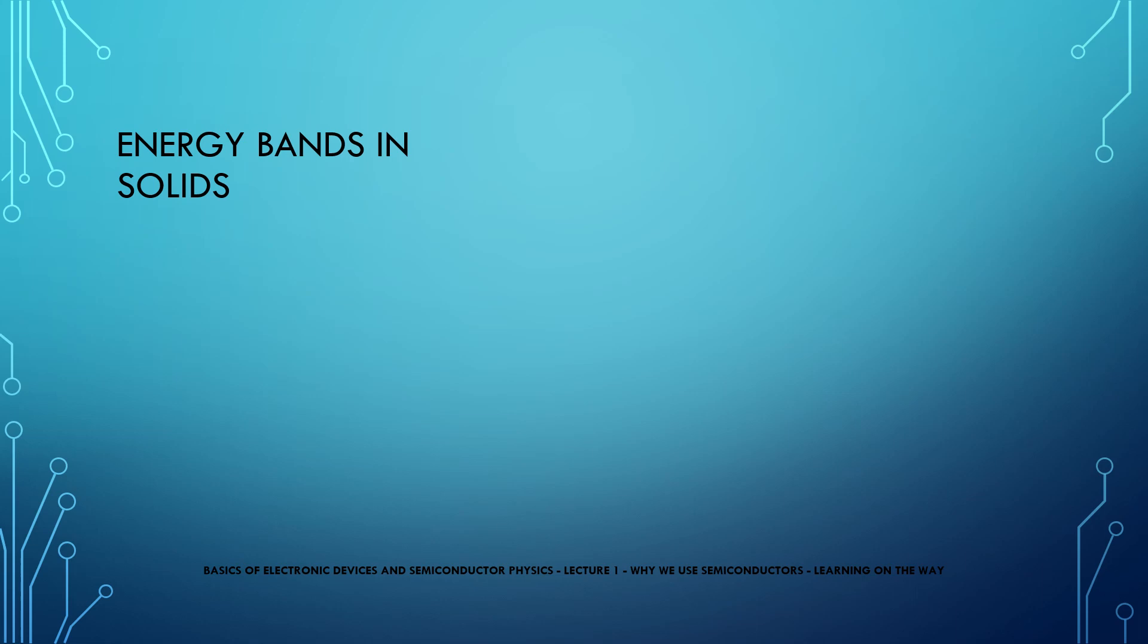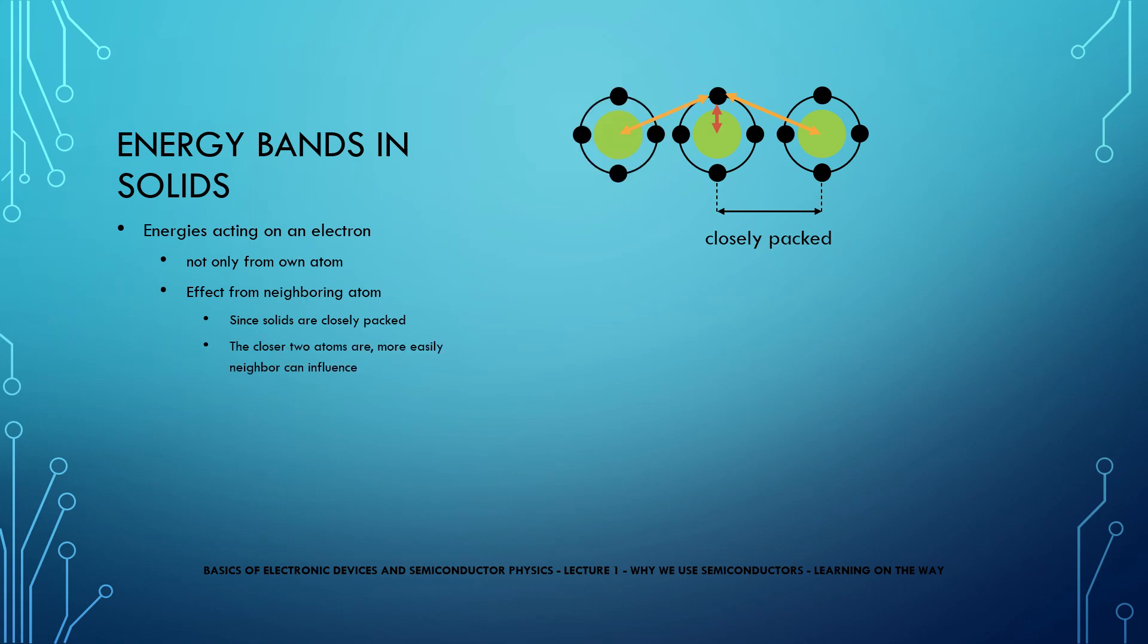But we need to understand one more thing: the energies acting on an electron are not just because of its own atom but also because of the neighboring atoms, as solids are packed closely together. The closer the atoms are to one another, the more likely it is to be influenced by the nucleus of a neighboring atom. In other words, the closer the atoms are, the easier it is to make an electron free from the orbit as it has more outward attractions from other sources or neighboring atoms.